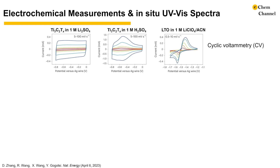It is important to make sure that the in-situ cell offers similar electrochemical characteristics of the materials. Here we show cyclic voltammograms of Ti3C2 MXene in 1 molar lithium sulfate and sulfuric acid electrolytes, and LTO in 1 molar lithium perchlorate in acetonitrile, featuring a wide range of sweep rates from 0.5 mV/s to 100 mV/s. The CV signatures are similar to what the literature suggests, including the rectangular shape of MXene in lithium sulfate, broad peaks of MXene in sulfuric acid, and well-separated peaks of LTO in the organic electrolyte. They correspond to the double-layer, pseudocapacitive, and battery-type mechanisms, respectively.